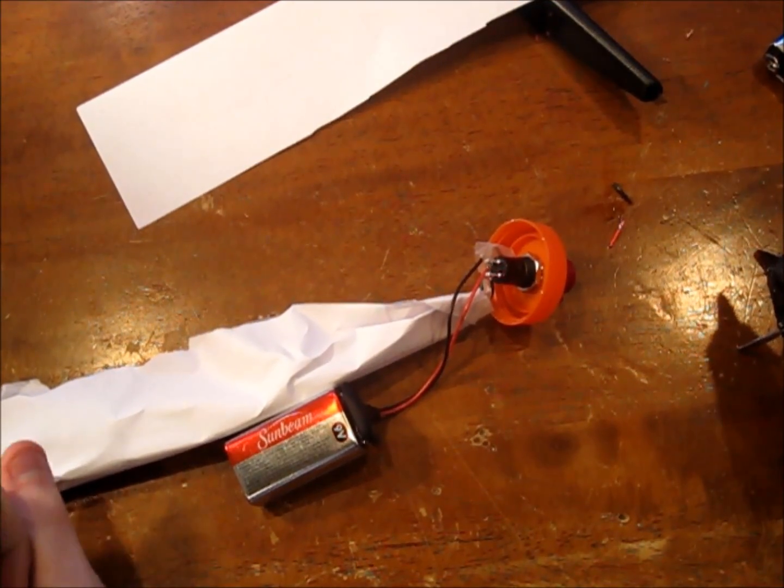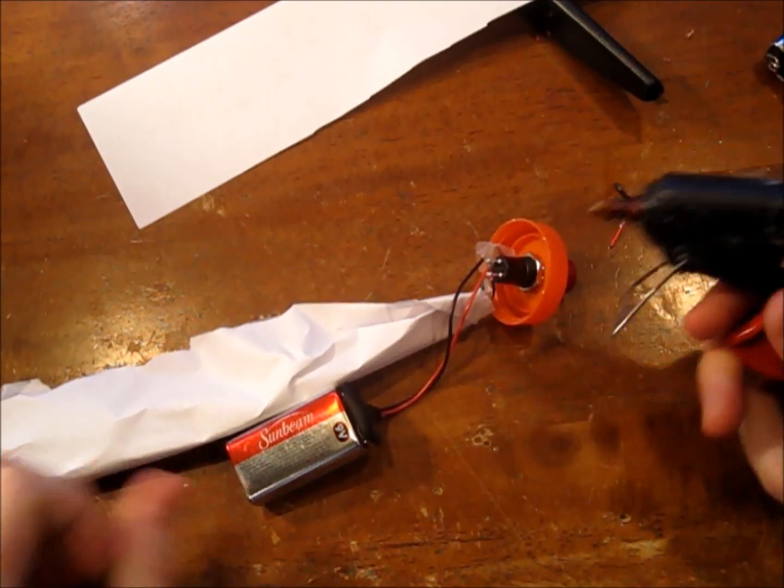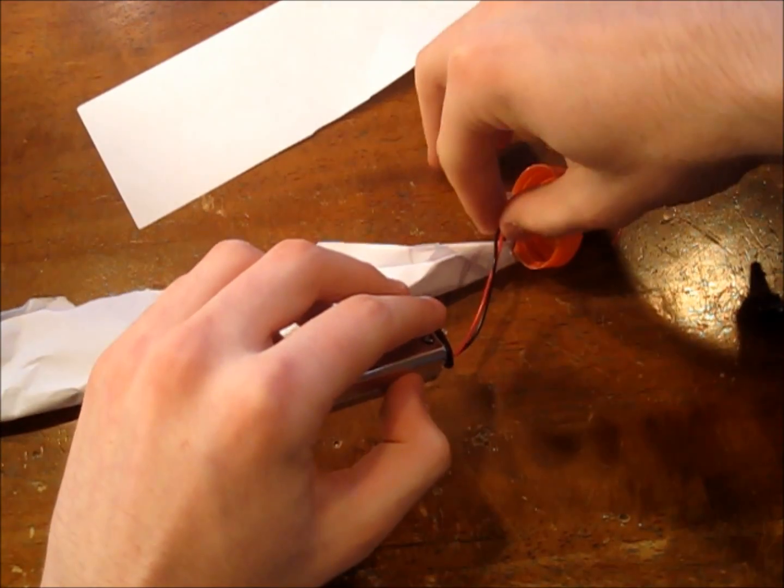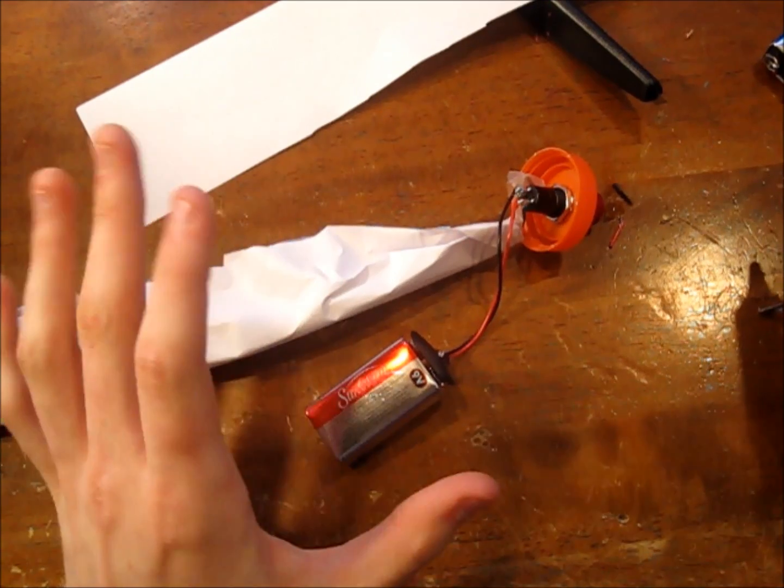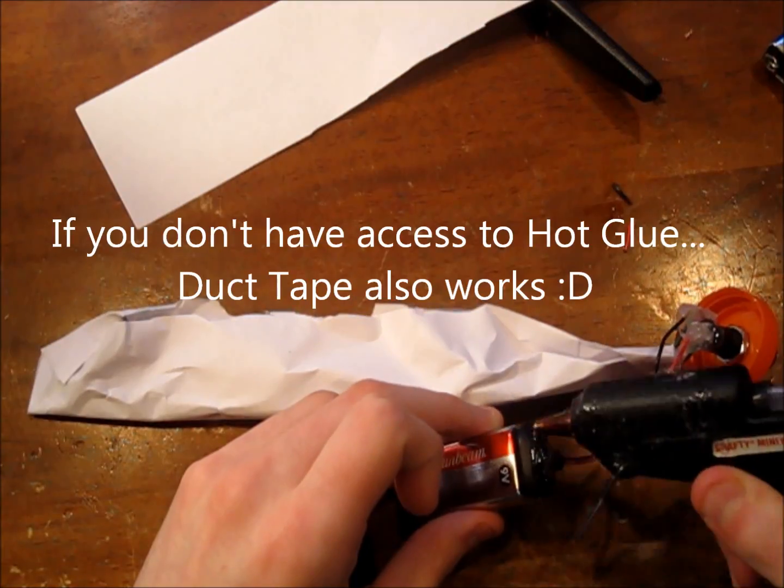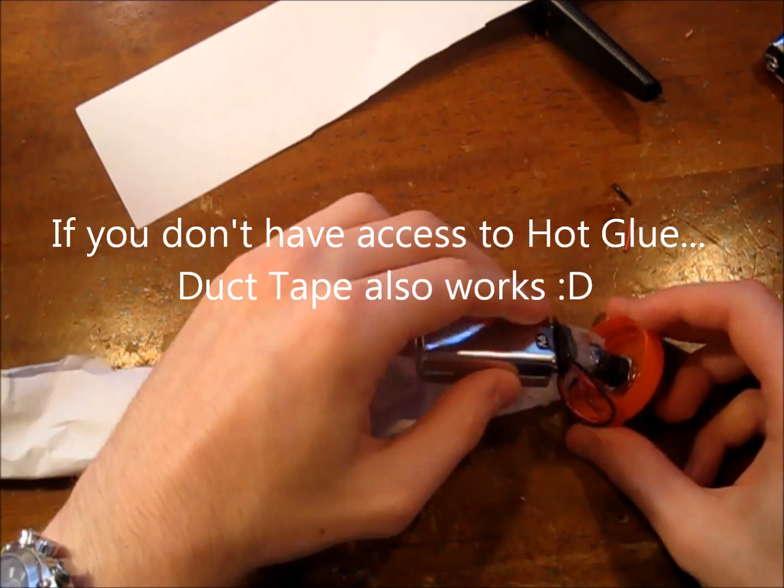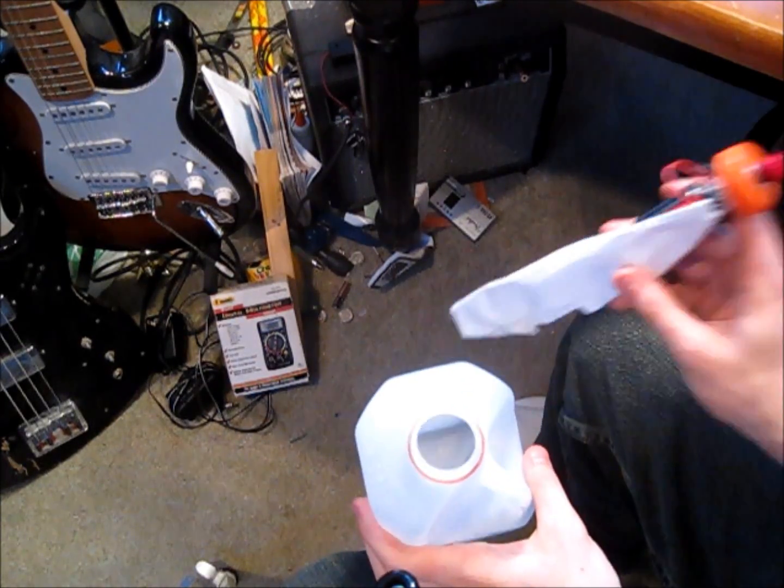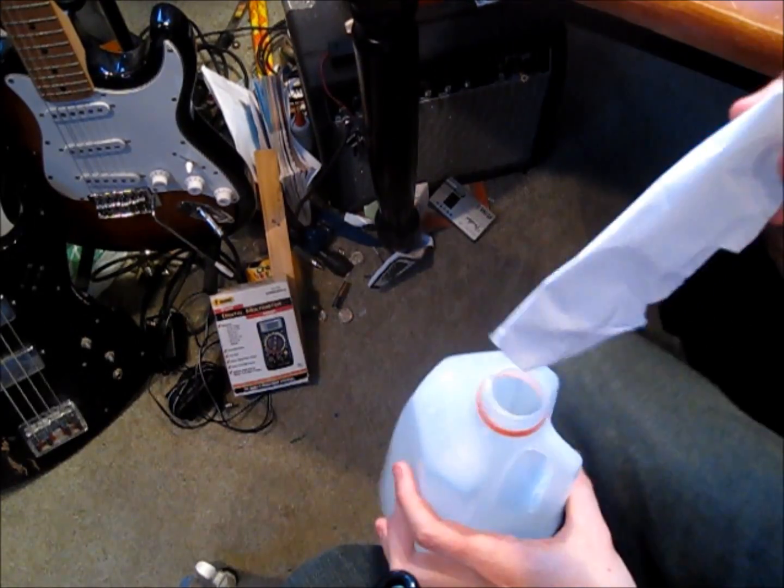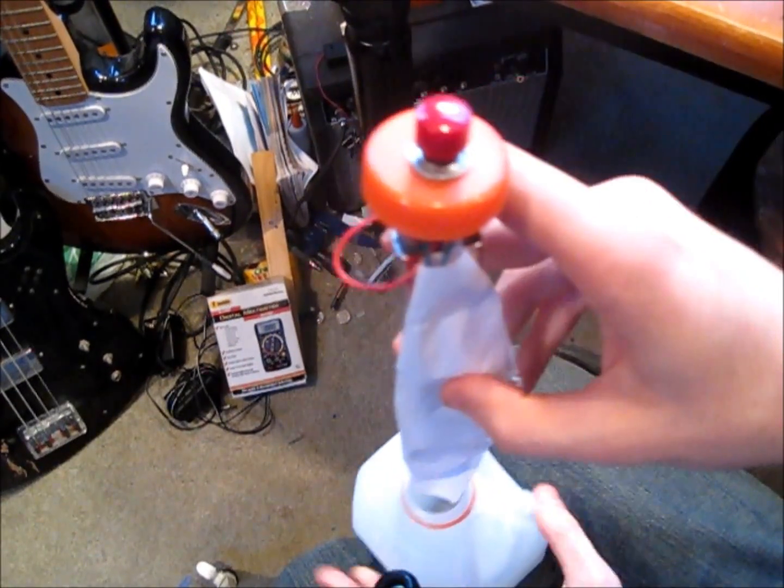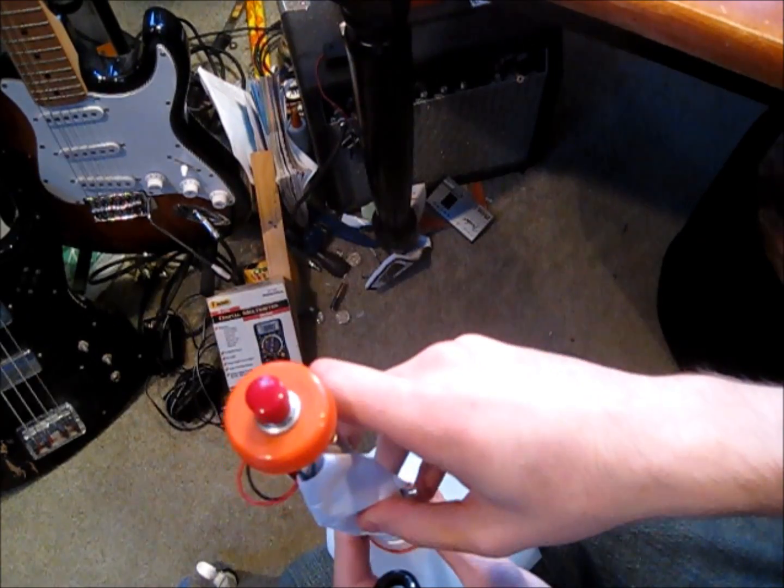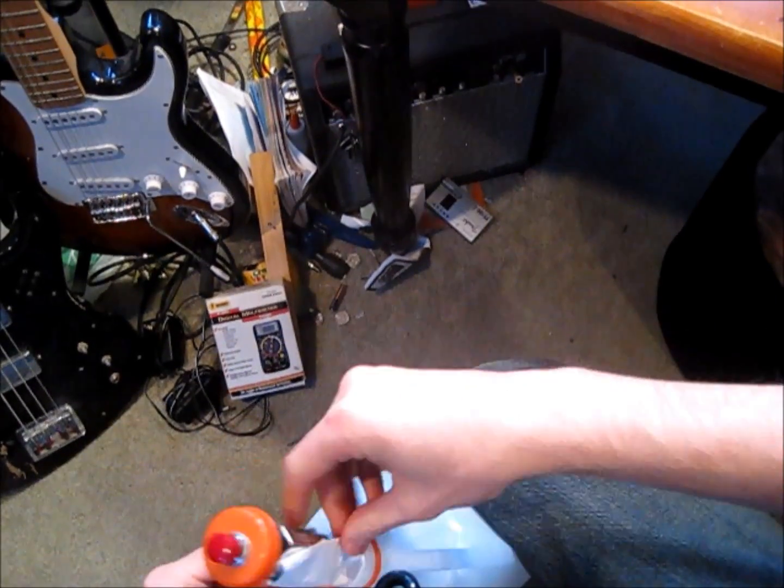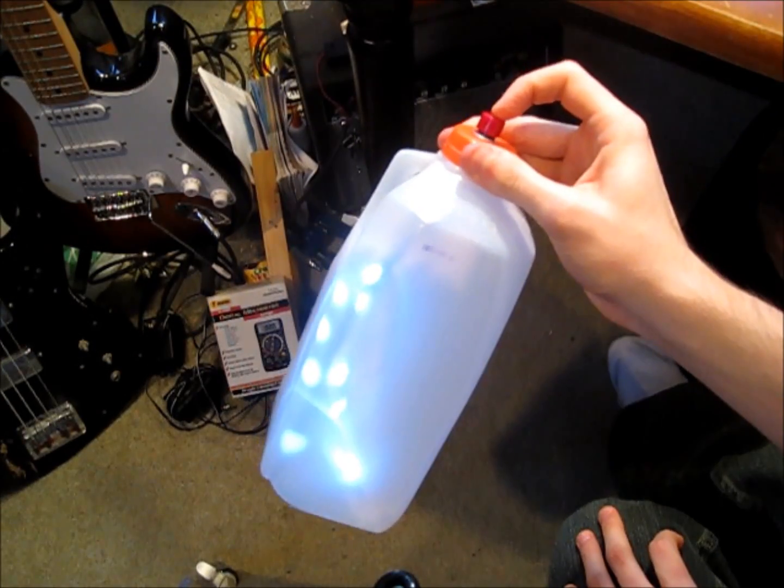Alright, we're almost done. The last thing we're going to do is just take some hot glue and glue the top of the battery pack straight to the bottom of the connector so that it sits a little bit nicer inside the bottle. Now that everything's all finished, we're just going to take all the lights and put it into the bottle like so. Make sure you don't crush anything.